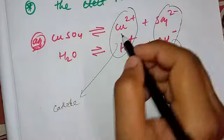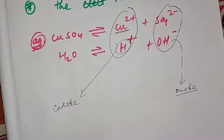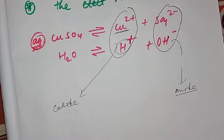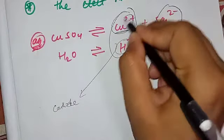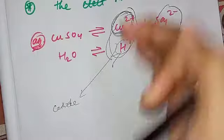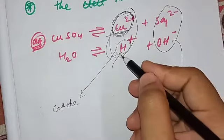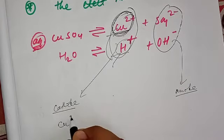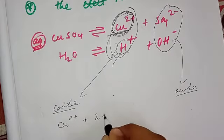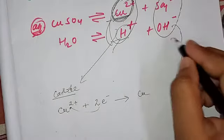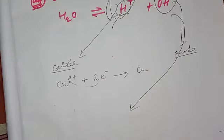Both cations move towards the cathode. Looking at the electrochemical series of cations, copper is placed below hydrogen. Moving downwards means increased ease of getting discharged, so copper will get discharged more easily than hydrogen. At the cathode, Cu²⁺ will attract two electrons and become copper metal, while hydrogen remains undischarged. This is what preferential or selective discharge means.